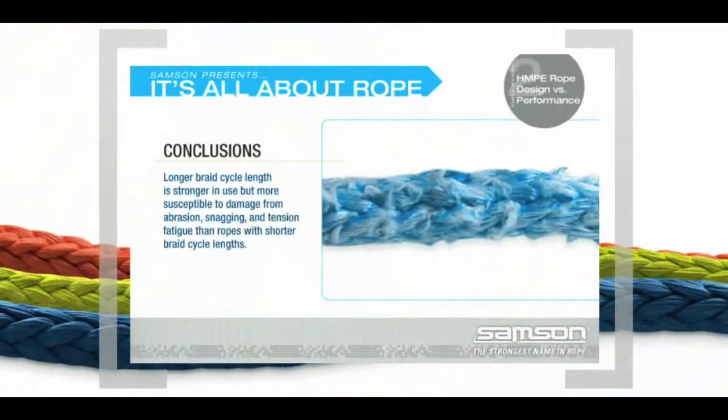Rope design is critical to service life. Not all ropes are created equal, nor do they perform the same. Longer braid cycle lengths reduce abrasion resistance, decrease tension fatigue life, and can increase strength efficiency. Even though the rope with a longer braid cycle length may be stronger, in use it's more susceptible to damage from abrasion, snagging, and tension fatigue than ropes with shorter braid cycle lengths. It just won't last as long.